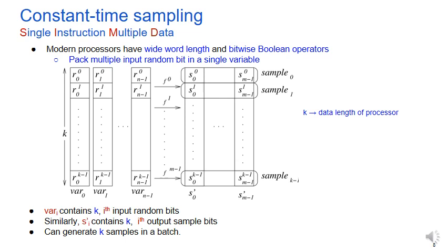Instead, we use the fact that modern processors have wide word length and bitwise boolean operators. So instead of using single bits in calculating boolean expressions, we can pack multiple bits in a wide variable and use the bitwise boolean operators to calculate the boolean expressions as before. In this example, we assume the processor has word length k and variable var i holds k numbers of ith input random bits. These variables are then fed as input to the boolean expressions and we get m variables where ith variable s prime i holds ith bit of all k samples.